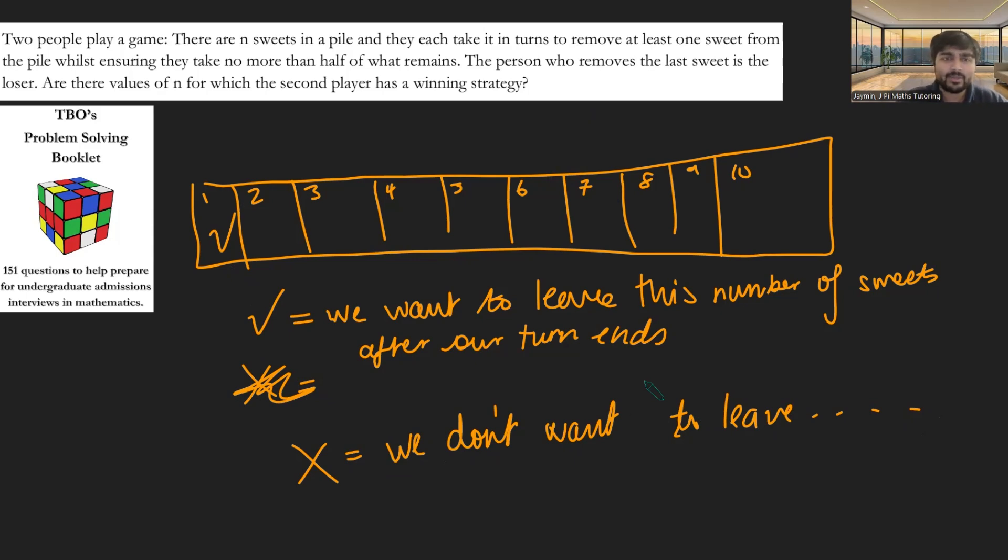Let's say it's my go. Square one will be a ticked square because once I've finished, if I can leave one sweet left over, that would be great because my opposition has to take that sweet and they lose. Would we want to leave the second square? The answer is no, because if we leave two sweets in the pile, then the opposition can only pick up one sweet, leaving us with the final sweet to pick up. So we do not want to leave two sweets in the pile.